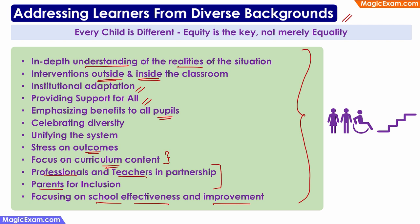The most important point on this slide is that every child is different. Every learner is different, and when talking about inclusive education and addressing learners from diverse backgrounds, we have to make sure that individual attention is given to all children. Equity is the key, not just equality. Equality may mean giving equal resources to all children, but equity means giving enough resources to each child to ensure all children reach the same results.